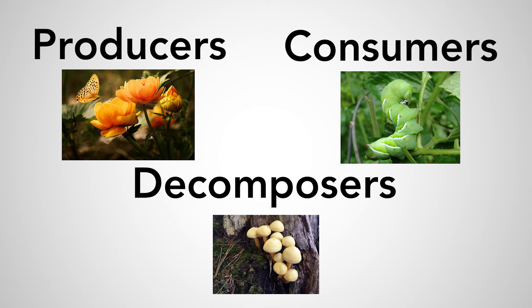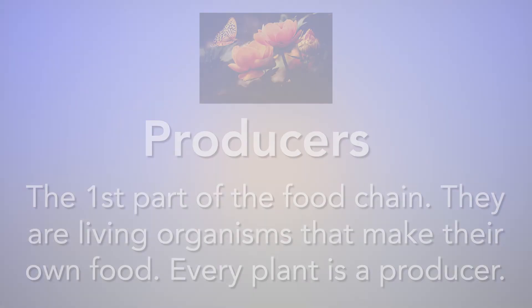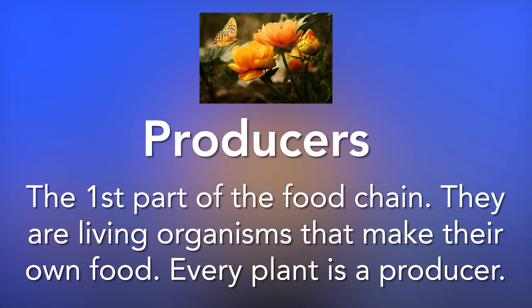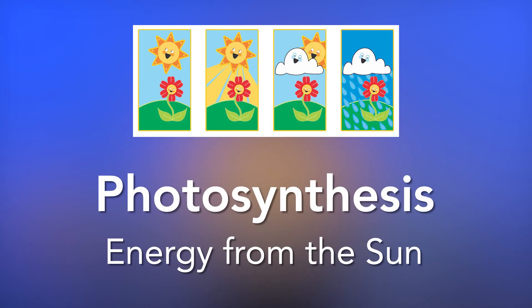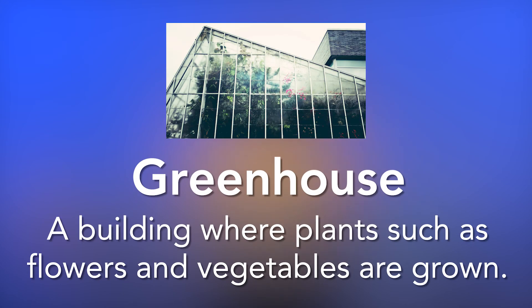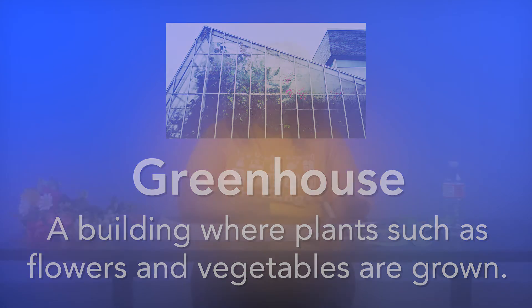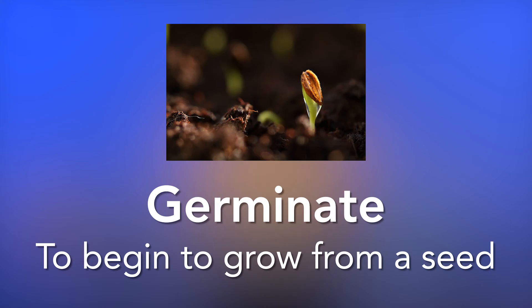Today we focused on producers as we made a greenhouse, and we learned that producers are the first part of a food chain. They are living organisms that make their own food. Every plant is a producer. Plants make their own food through a process called photosynthesis — the use of energy from the sun to make food. We learned about greenhouses and planted a pumpkin seed. Did you know that it takes about three to ten days for a pumpkin seed to germinate? Germinate means to begin to grow from a seed. So keep checking on your pumpkin seed — you won't want to miss a thing.